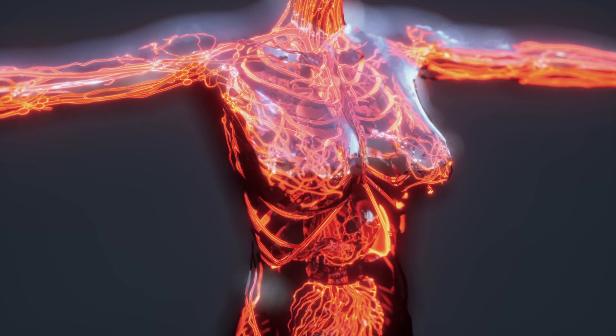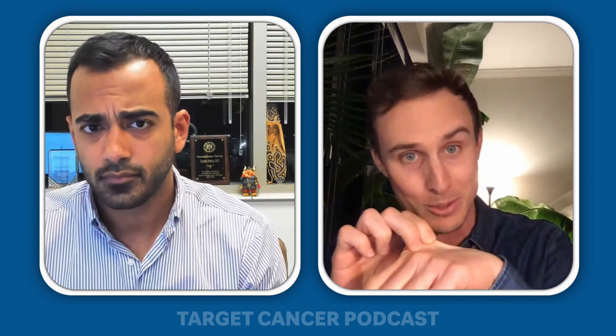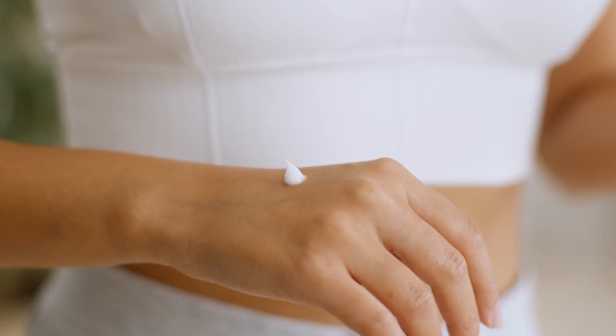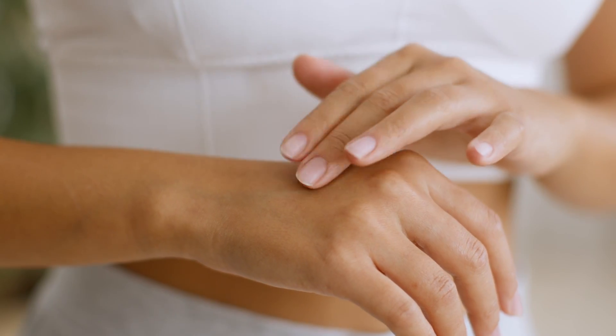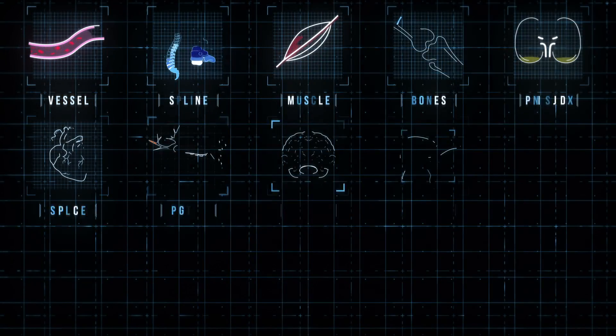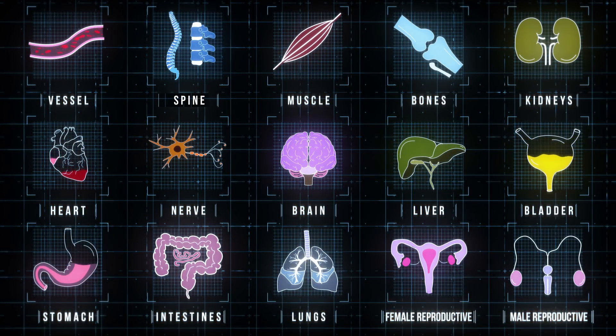They're in every single organ. They get a lot of media attention in the skin — everybody wants to sell you a skin product that rejuvenates your fibroblasts — but they make up your spleen, your lungs, every organ. They're producing collagen, matrix, and all sorts of things so that all the organs can function as they normally function and all the cells that are there can perform their job.